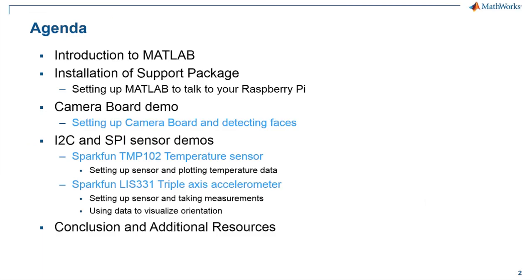First, I will start out by providing a brief introduction to MATLAB for those of you who may not be familiar with it. Next, I will explain how to install the MATLAB support package for Raspberry Pi. This will be followed by some demos showing how to use MATLAB with a camera board and with some I2C and SPI sensors. Finally, we will conclude the webinar with some additional resources.